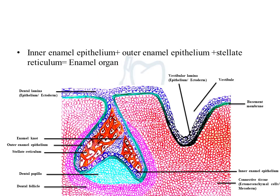Another structure visible at this stage is the enamel knot — undifferentiated cells of the enamel organ that did not produce glycosaminoglycans or change into stellate reticulum. The enamel knot represents the future cusp: if there are two cusps, there will be two enamel knots; five cusps means five enamel knots. Initially we see one enamel knot, referred to as the primary enamel knot.